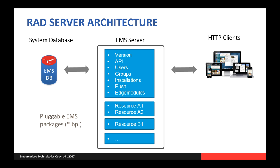Every RAD Server has a system database — an InterBase database created by the EMS executable the first time it runs — and it stores all information, including data coming from IoT devices. As programmers, we can extend the functionality of RAD Server through packages. RAD Studio comes with wizards to build EMS packages compiled as BPL files — the RAD Studio or Delphi/C++ Builder version of a DLL. There is typically an INI file listing all those BPL files. When the EMS server starts, it loads all the BPLs, making this a very pluggable architecture where you can gradually add, replace, or upgrade resources without disrupting the existing solution.